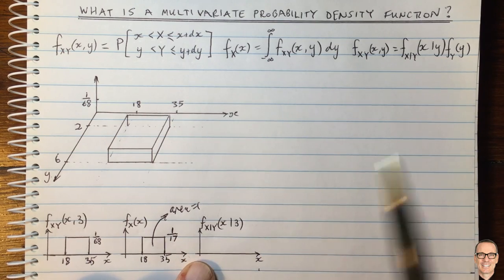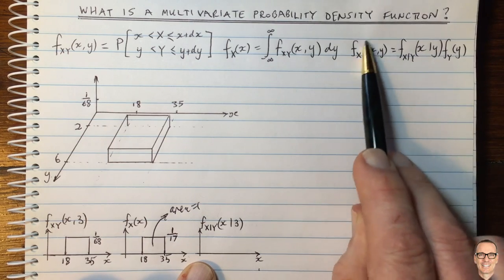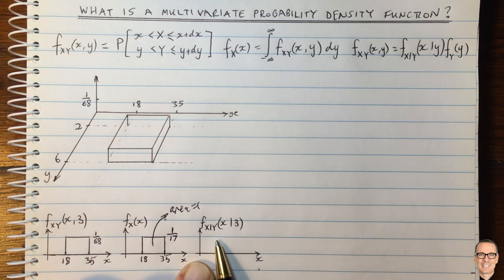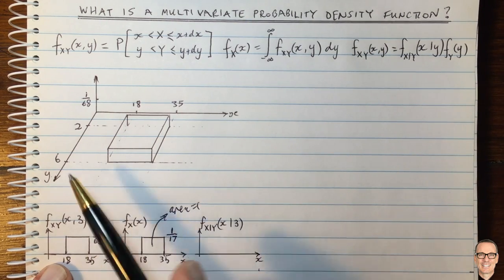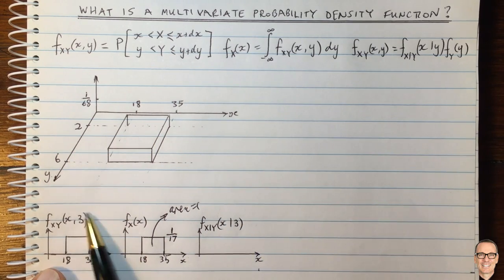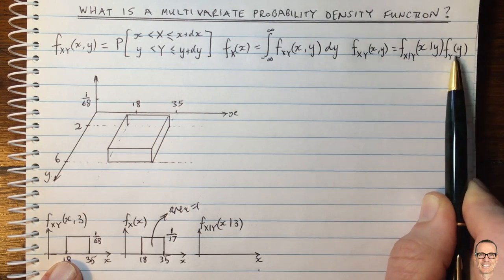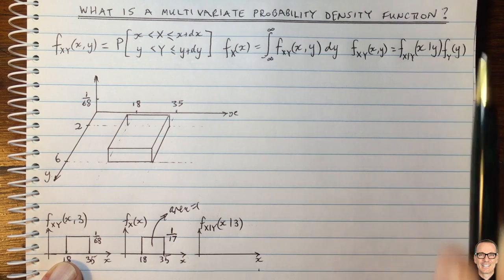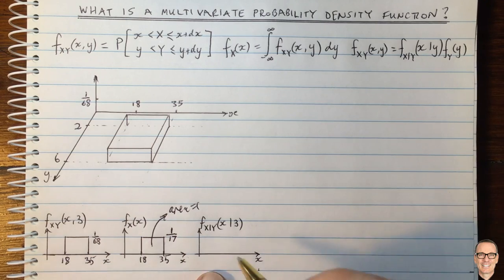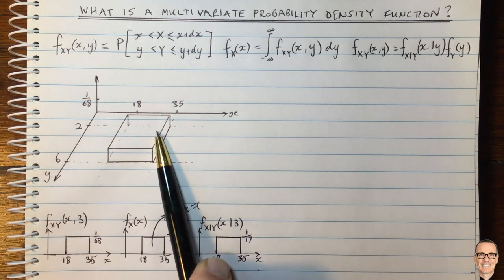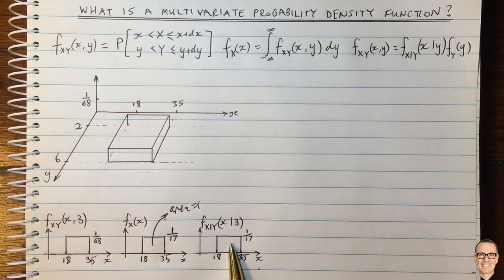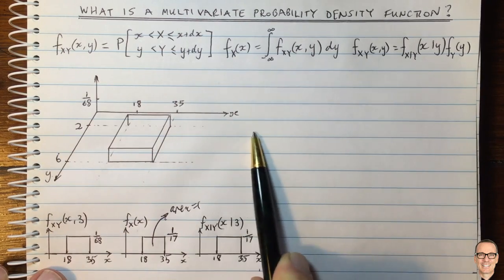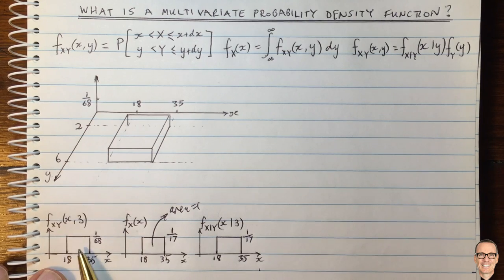What about the conditional PDF? We get it by taking the joint PDF and dividing by the univariate PDF for Y — that's how we get f of X given Y. When Y equals 3, the conditional PDF is the slice function divided by f(Y) evaluated at Y equals 3, which is just a single number. So again it has the same shape. In this uniform distribution example, all three functions have the same shape but different heights. The two on the right are both proper PDFs with area equal to 1; the slice on the left is not a PDF.